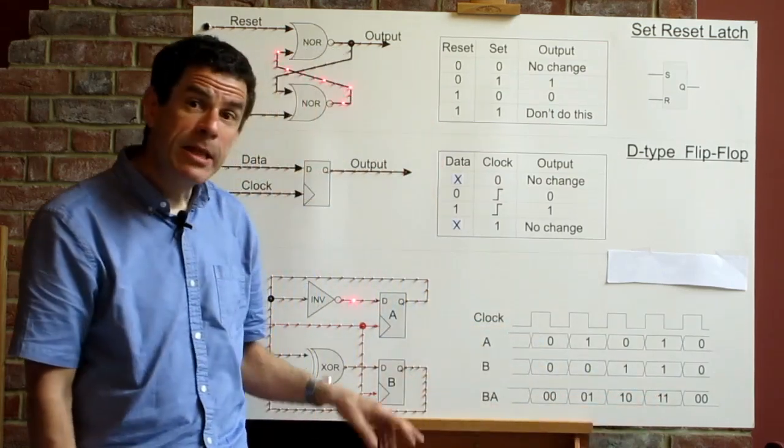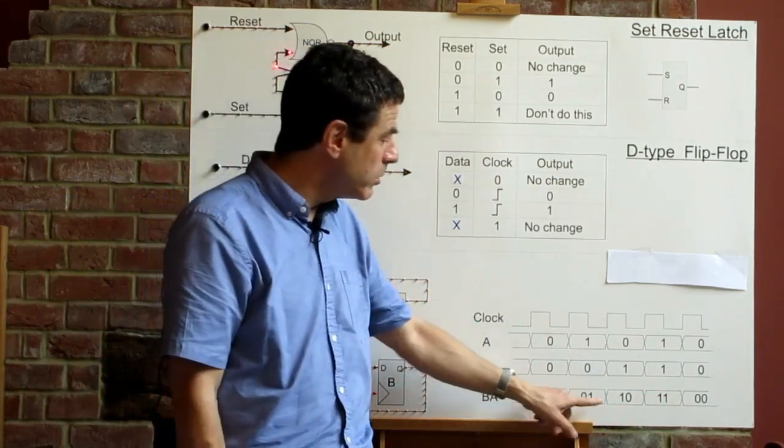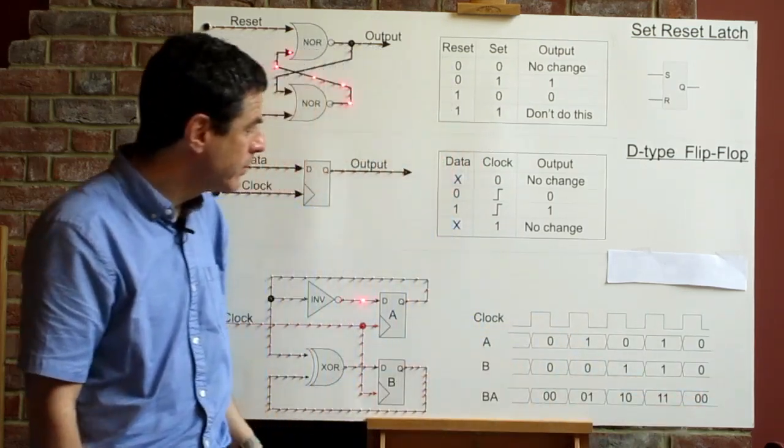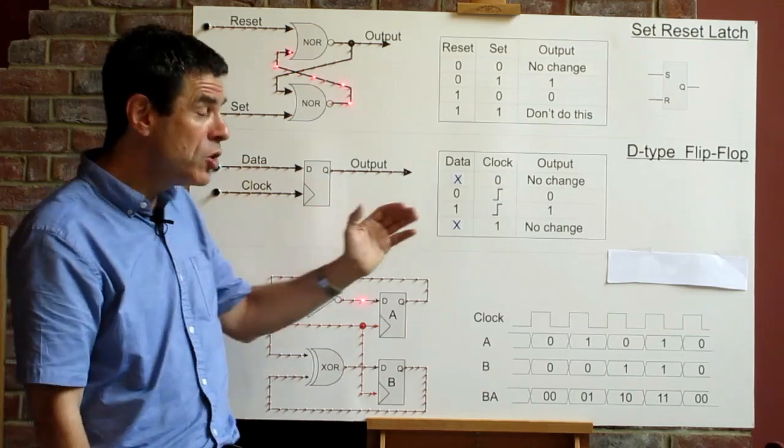If we look at this sequence, we can see that this is counting in binary. This is 0, 1, 2, 3. And then we wrap around and start from 0 again. So this little circuit is a two-bit counter.